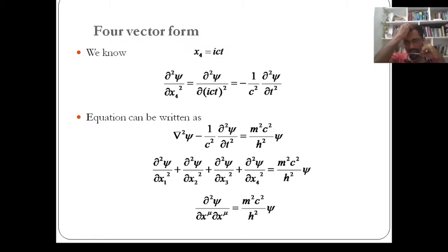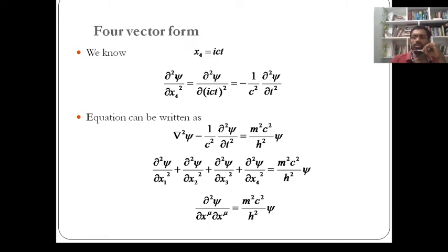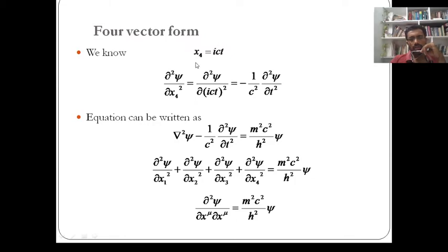Here, in relativistic mechanics, we use a four-vector. The fourth coordinate x₄ can be written as ict. In Newtonian mechanics there is three-dimensional space with x, y, and z axes. But in relativistic mechanics we need another coordinate — the space is a four-dimensional spacetime — and that fourth coordinate is written as ict.